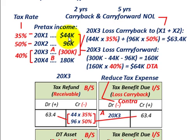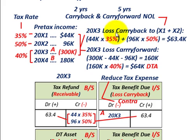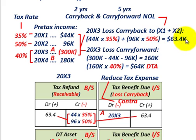We can offset our income that we already paid taxes on — our 20x1 and 20x2 income. The tax benefit, or what we'd be getting back as a tax refund for this loss carry back, would be $44,000 times the 35% tax rate that we paid, plus $96,000 times the 50% tax rate. So the total amount we paid in taxes was $63,400 for the loss carry back — that's what we're going to get a refund on.